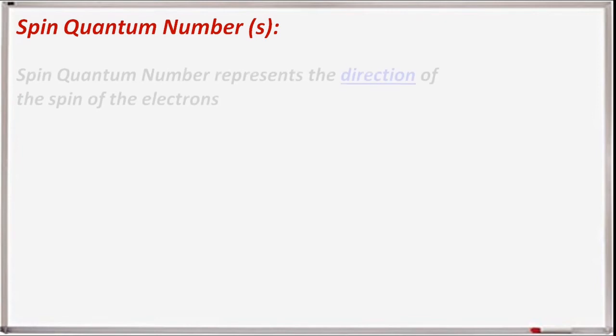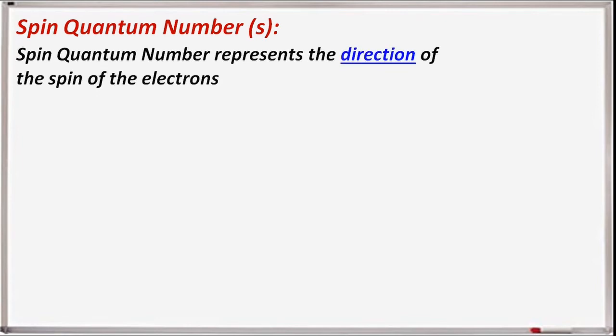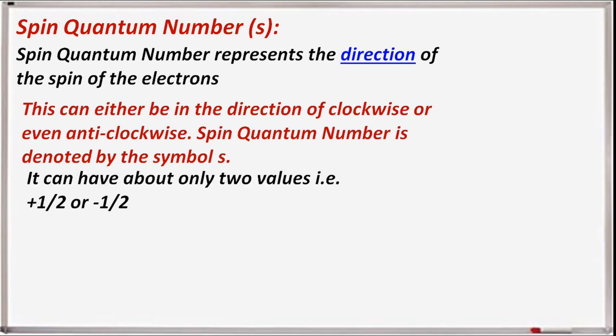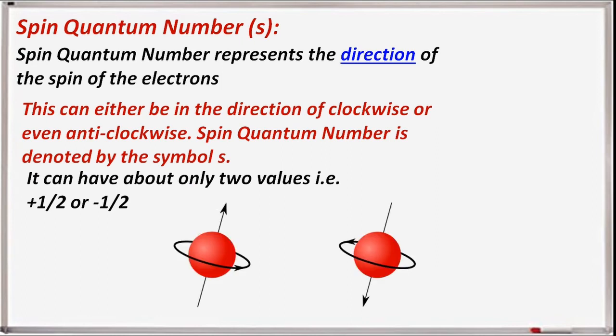The spin quantum number, s, represents the direction of spin of the electron, which can be either clockwise or anticlockwise. It is denoted by the symbol s and can have only two values: plus half or minus half. Plus half represents clockwise spin and minus half represents anticlockwise spin. There are thus two spin states for electrons.